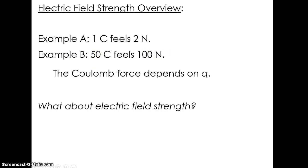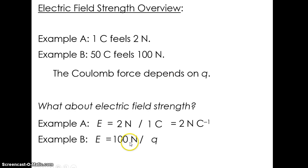But what about electric field strength? In the first case, electric field strength, which we find using F over Q, was going to be the two newtons divided by the one coulomb, and that's two newtons per coulomb. In the second example, we can use the same equation to find the electric field strength. It was a bigger 100 newton force, but it was a bigger charge, 50 coulombs. And it came out to the same exact value.